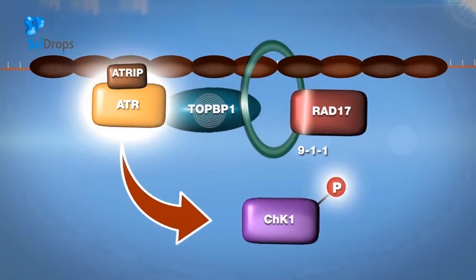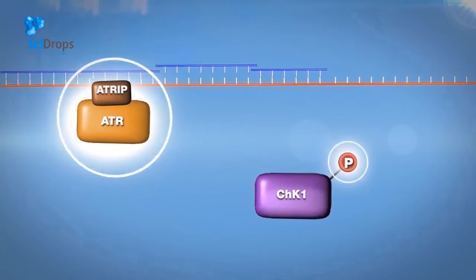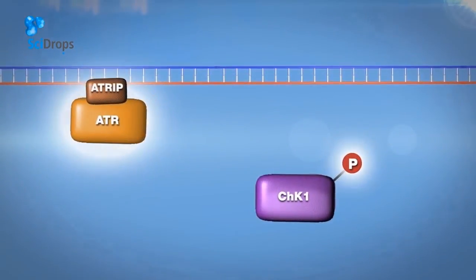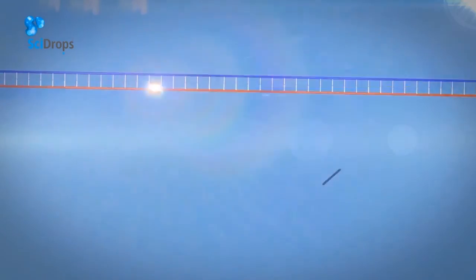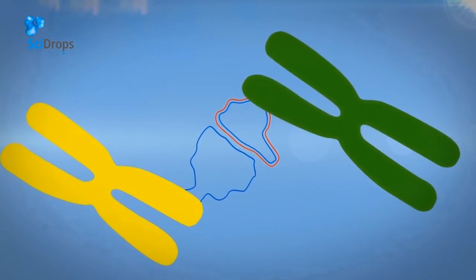By phosphorylating numerous targets, ATR and CHK1 promote the coating and the replication of the exposed single-stranded DNA molecule, therefore resolving this problem. The double-stranded DNA molecule does not tend to hybridize with distant regions, and it safely contains the genetic information.